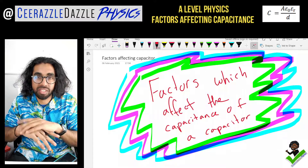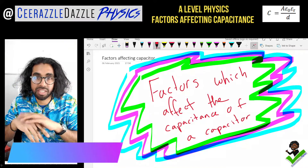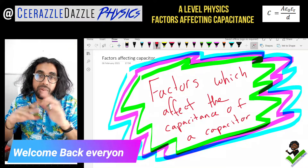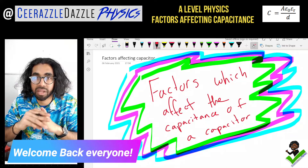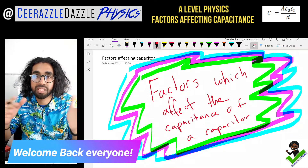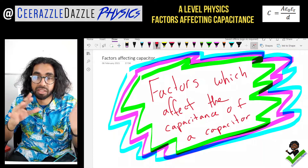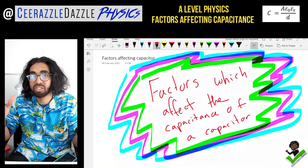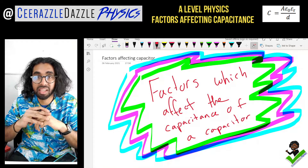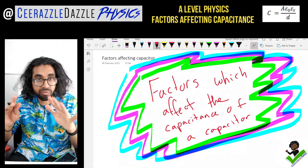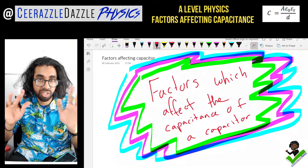Hey everyone, welcome to another session of Razzle Dazzle Physics. In today's session we're going to be talking about the factors which affect the capacitance of a capacitor. Put down today's title: 'The Factors Which Affect the Capacitance of a Capacitor.' This will be in the A-level syllabus, in the second year — sometimes in the fields section, but many schools start teaching it straight away.